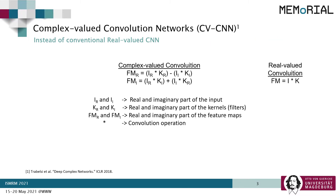Let's have a look at what complex-valued convolution is and how it differs from real-valued ones. For an ordinary real-valued convolution, the input is convolved with the kernel to generate the feature map. In complex-valued convolution, to obtain the real part of the feature map, the real part of the input is convolved with the real part of the kernel, and the imaginary part of the input is convolved with the imaginary part of the kernel, and then they are subtracted. To obtain the imaginary part of the feature map, the real part of the input is convolved with the imaginary part of the kernel, and the imaginary part of the input is convolved with the real part of the kernel, and finally they are added.